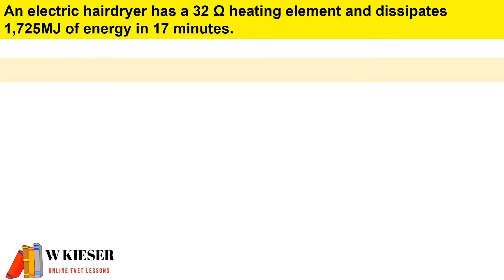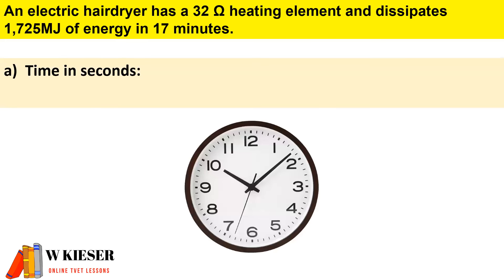In this example, an electric hairdryer has a 32 ohm heating element and dissipates 1,725 megajoules of energy in 17 minutes. Now just a reminder that there are 60 seconds in one minute and 60 minutes in one hour. To convert minutes to seconds, we will multiply 17 by 60, and that will give us 1,020 seconds.